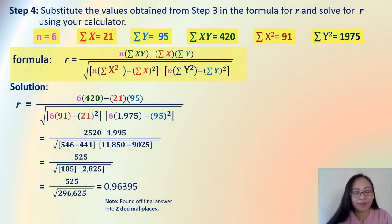Now, we have to take note that our R should be rounded off into two decimal places. Therefore, we have R is equal to 0.96.